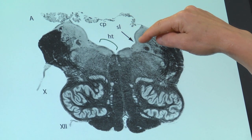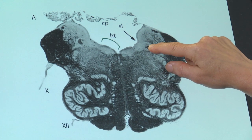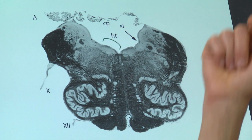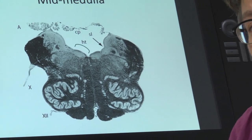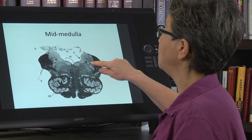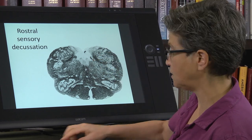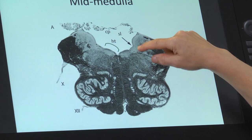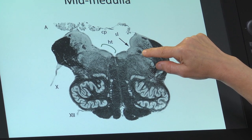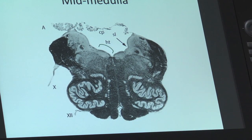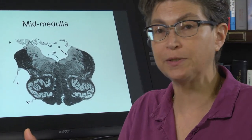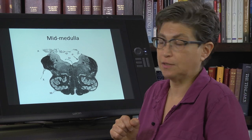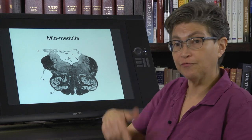Lateral to the sulcus limitans is a sensory area. We have one familiar place and one new set of sensory nuclei. The familiar place is the nucleus of the solitary tract — sometimes it's a black island in a white sea, sometimes a white island in a black sea; it will vary across levels. At this level, rostral to the obex — O-B-E-X, the point where the fourth ventricle opens — the nucleus of the solitary tract deals with taste, receiving information from cranial nerves 7, 9, and 10.